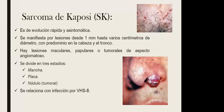El sarcoma de Kaposi es de evolución rápida y asintomática. Se manifiesta por lesiones desde un milímetro hasta varios centímetros, con tamaño muy variable, y predomina en cabeza y tronco. Las lesiones se pueden dividir en tres estadios: la mancha —máculas—, la placa y el nódulo tumoral. Las lesiones pueden tener aspecto tumoral y angiomatoso, es decir, con formación de vasos dentro de la lesión.